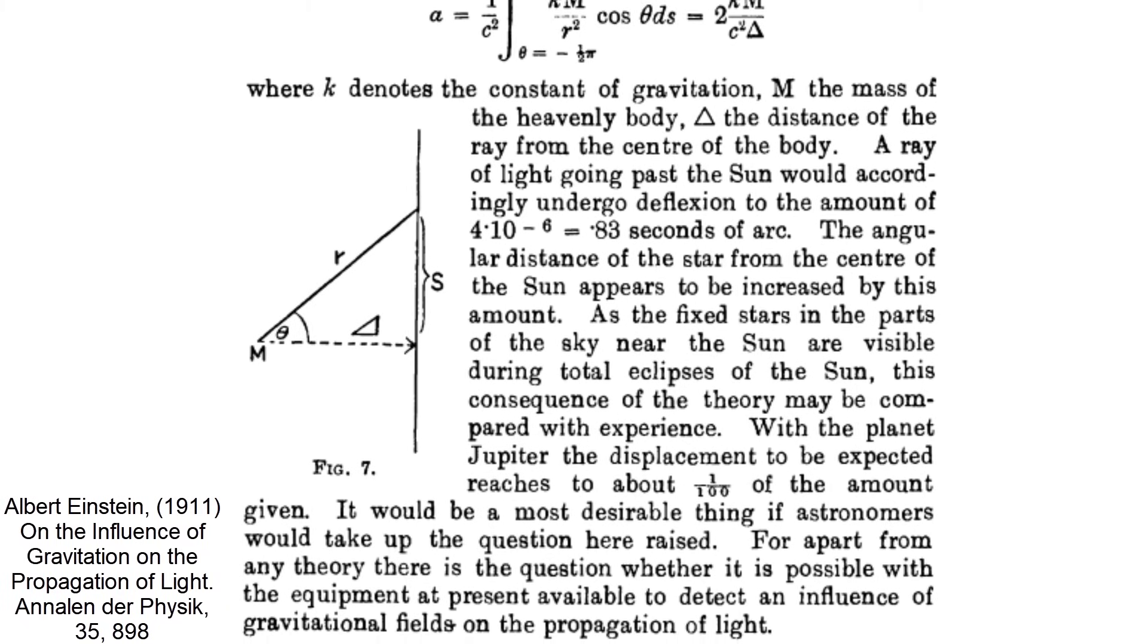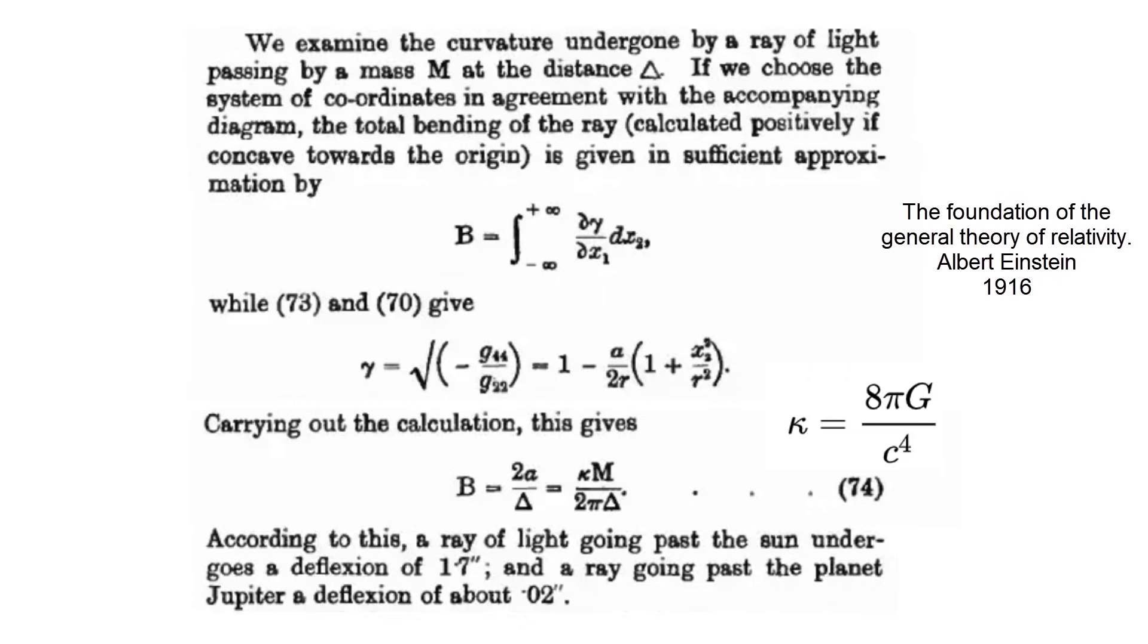And in 1915, he gave the general relativity prediction of 4 times the gravitational constant times the mass divided by radius and c squared of around 1.75 arcseconds, which is the observed one.